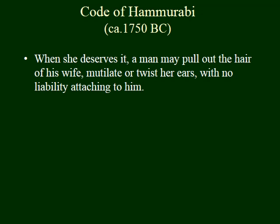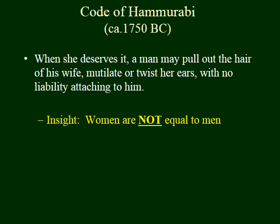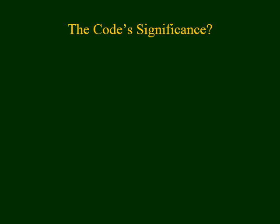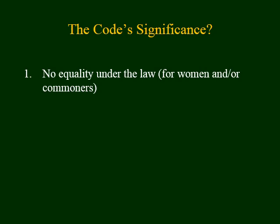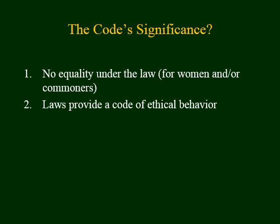Finally, we see some issues involving gender relations. 'When she deserves it, a man may pull out the hair of his wife, mutilate or twist her ears with no liability attaching to him.' This tells us that for the Mesopotamians, women were not equal to men. What's so important about this code? It shows us that this isn't a bill of rights or a constitution like in the United States, because there's no equal treatment under the law for women or for people of different social classes. Also, the law provided a code for ethical behavior.